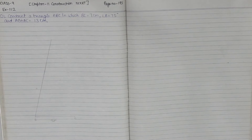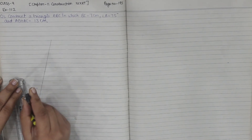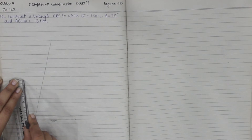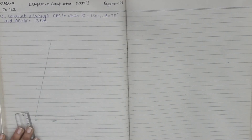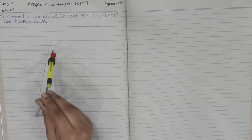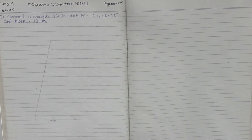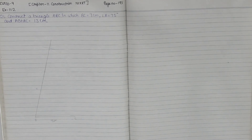Now we are going to take the measurement of AB plus AC, that means 13 cm, on the compass. This is the measurement of 13 cm on the compass. With B as center, we are going to draw an arc with this measurement. This is the point D.